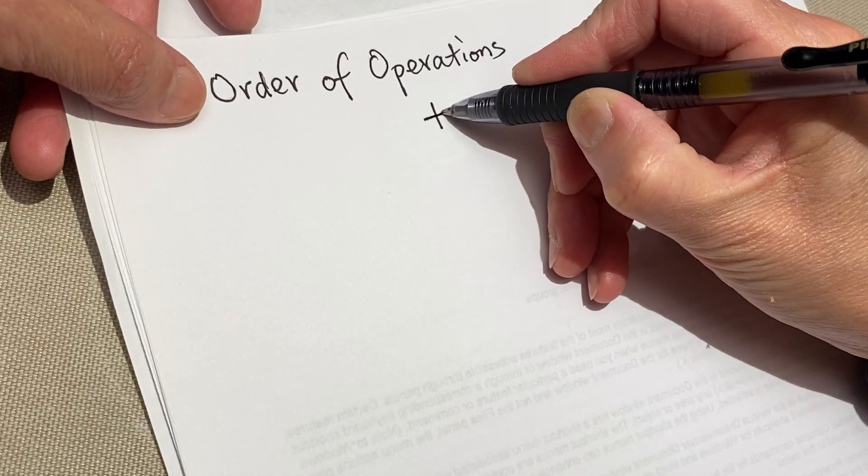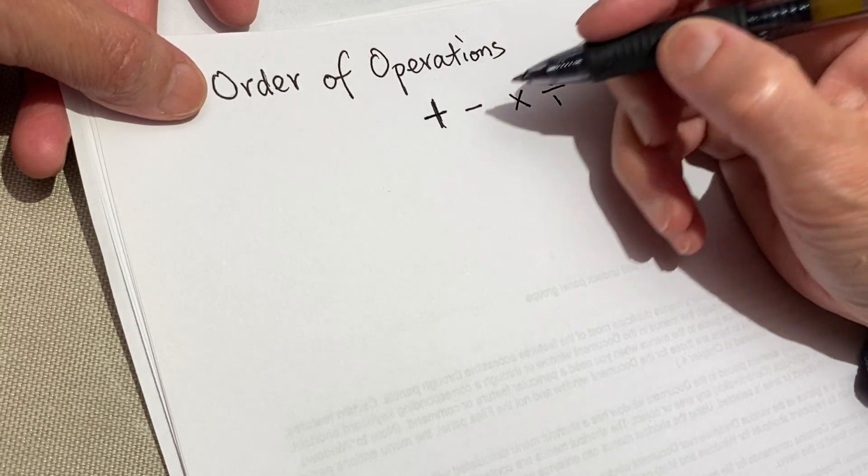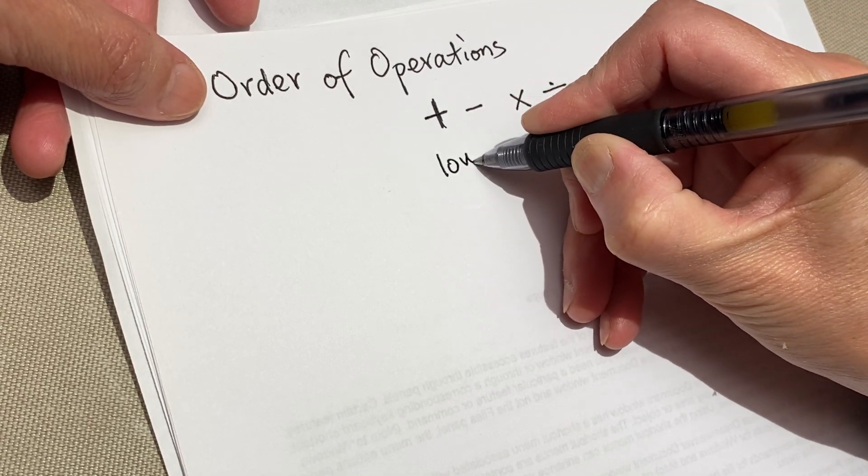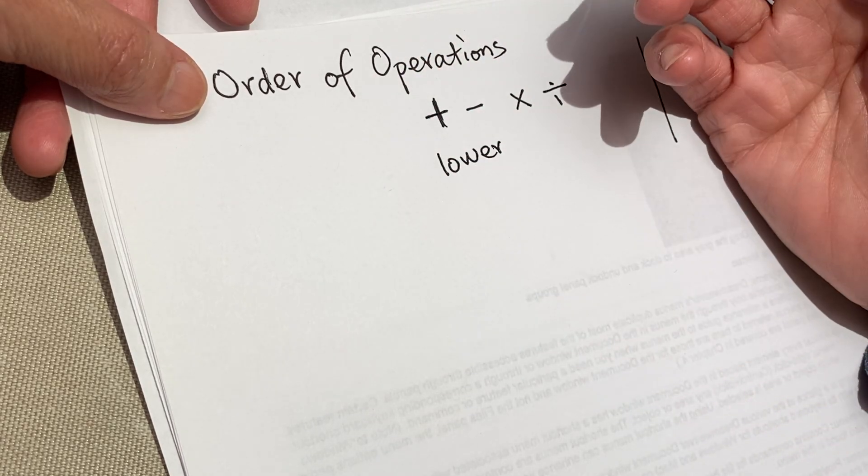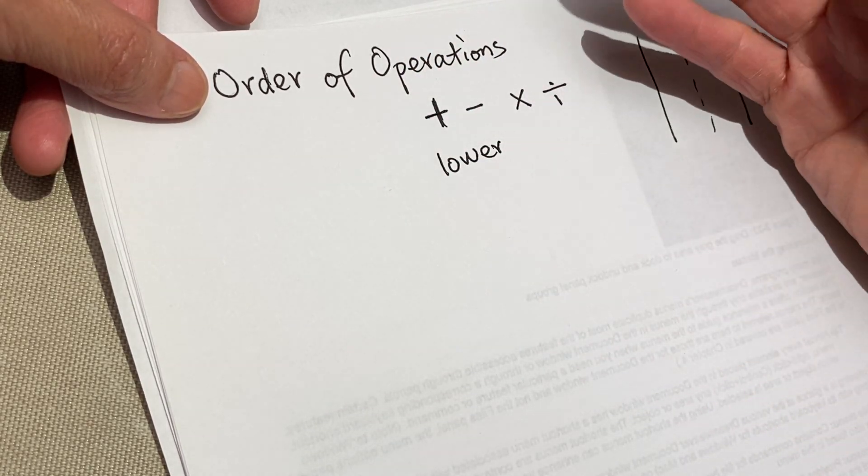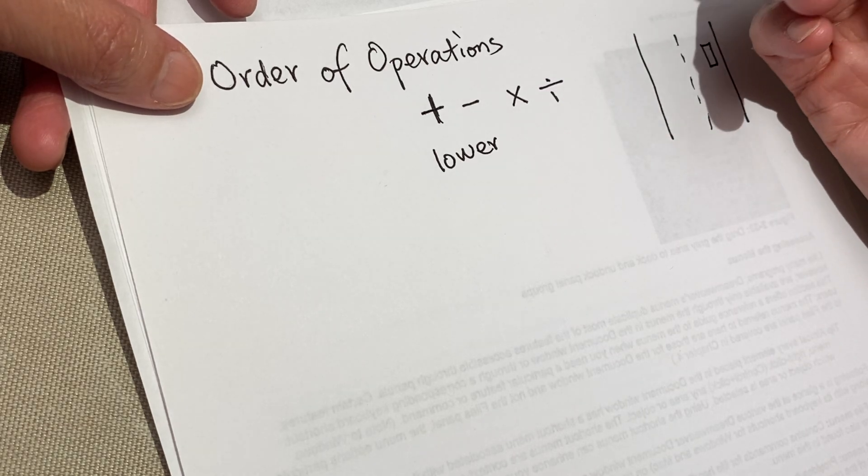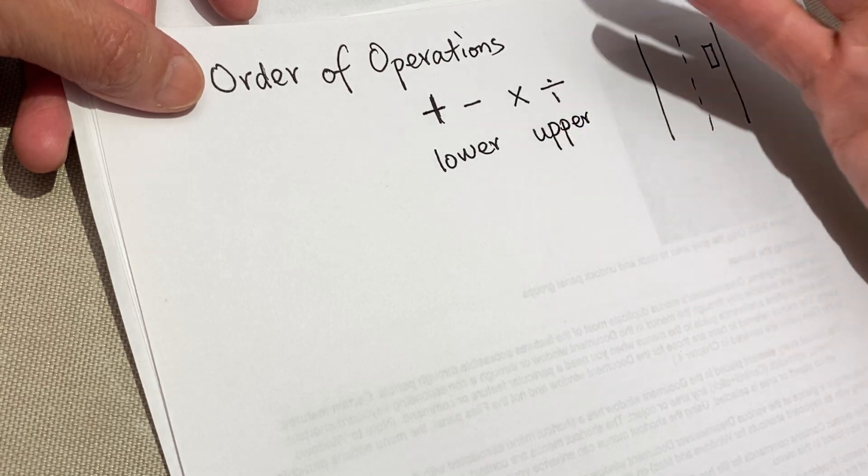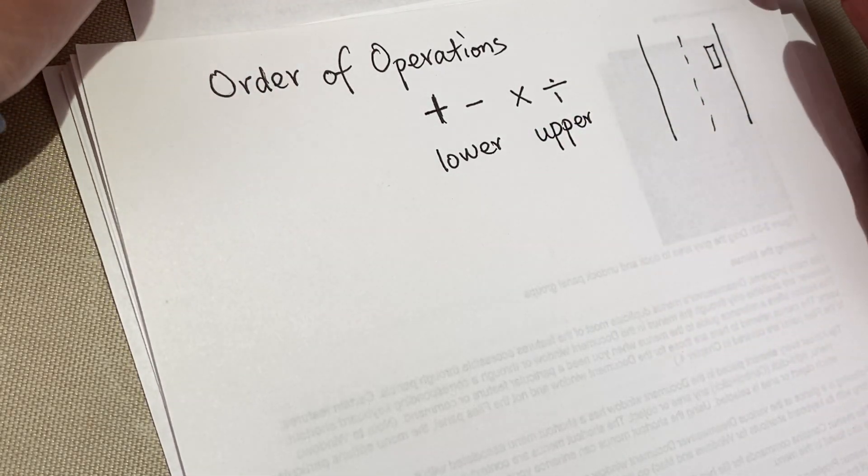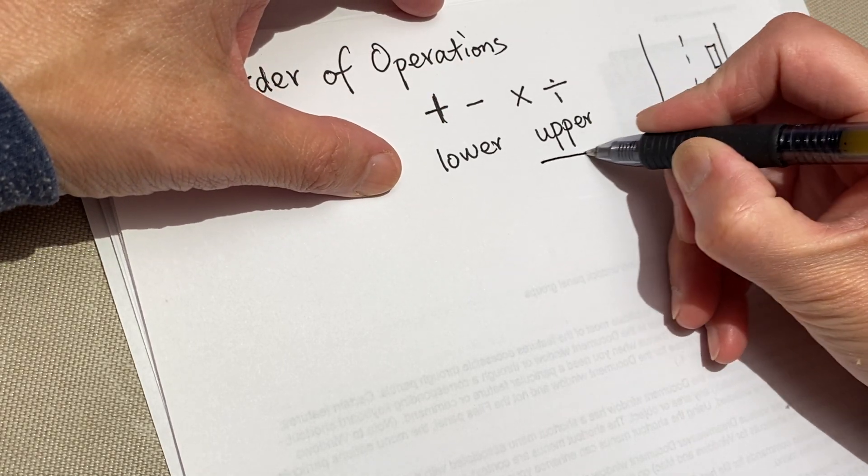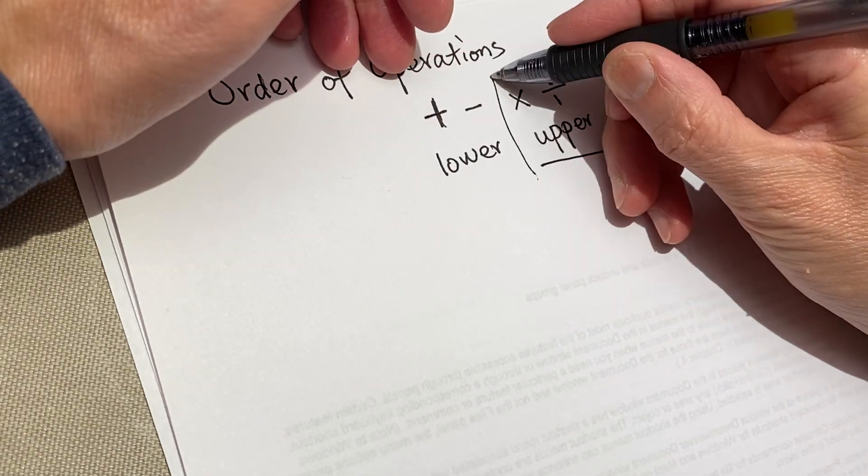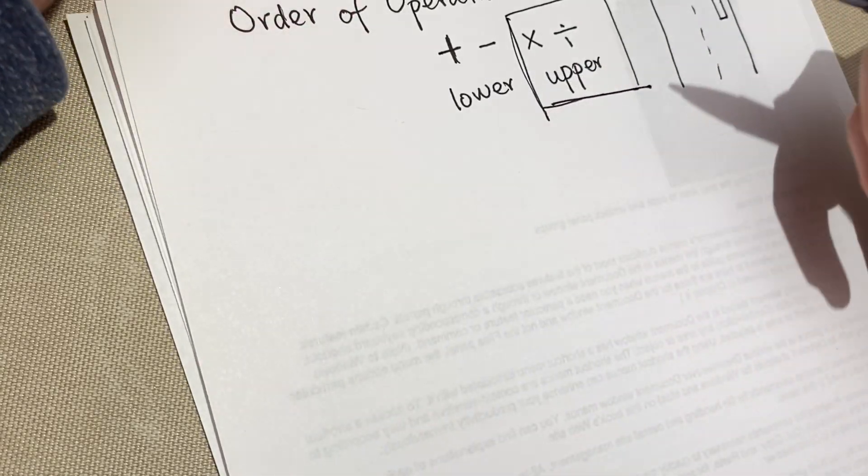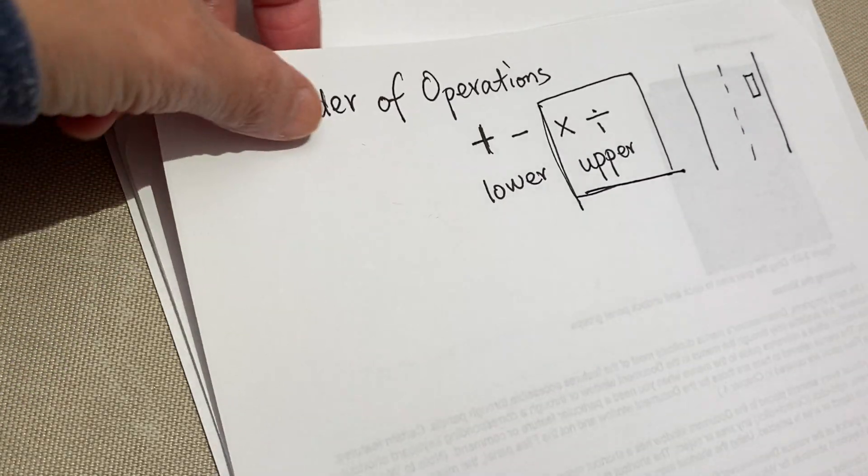So when we were in first and second grade, we learned about addition and subtraction. They are the lower level operation. And since we come to third, fourth, fifth grade, we come to the upper grade, right? So these are the upper grade level of operation. This is not about bullying—the bigger, more complicated operations go first. So that is the rule. No need to argue about it, okay?